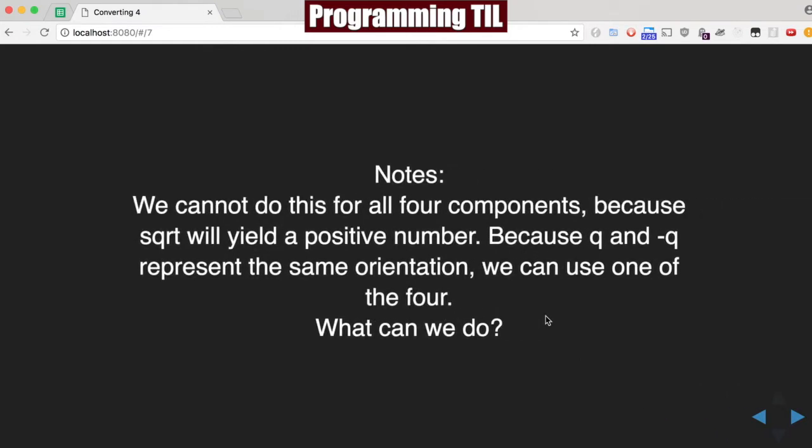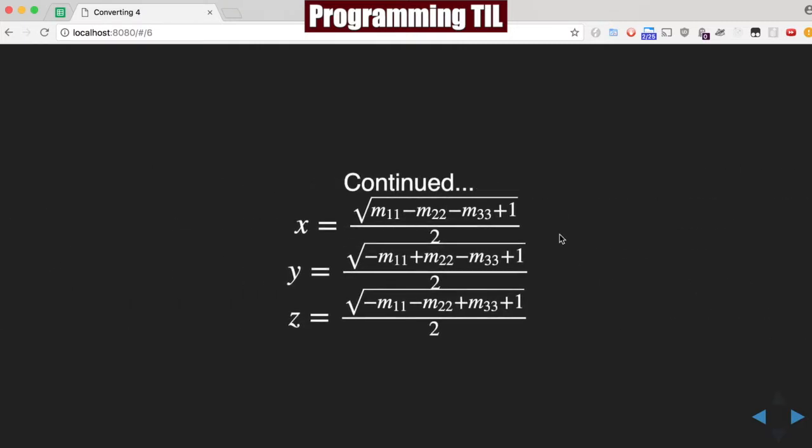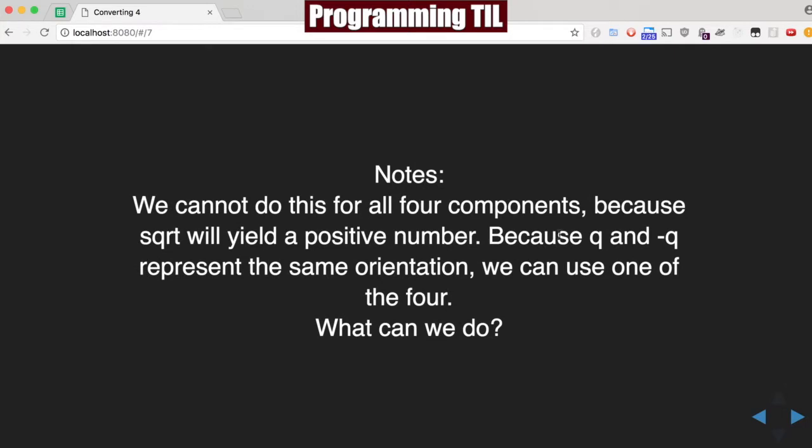So now that we have the four components, we can't really use them all simultaneously, because the square root is always going to yield a positive number. So the square root up here is going to be positive. So because of that, Q and negative Q represent the same orientation. We can use one of the four, but which one do we want to use?